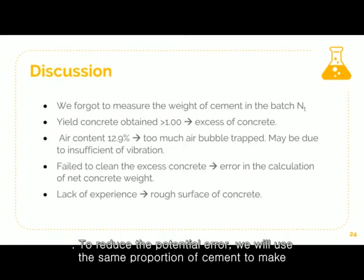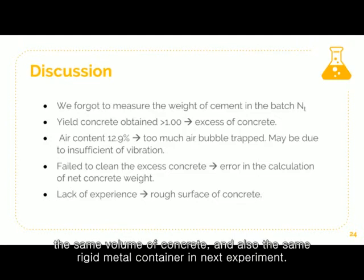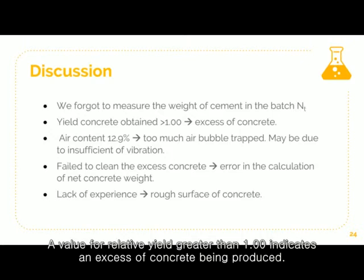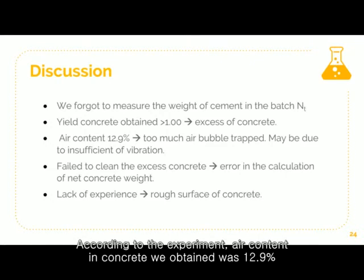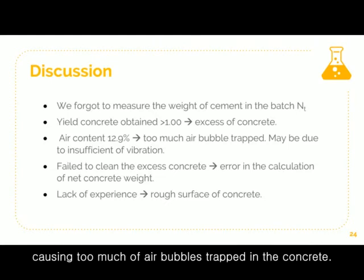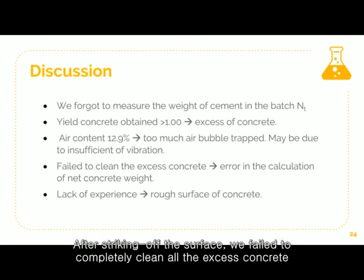To reduce the potential error, we will use the same proportion of cement to make the same volume of concrete and also the same rigid metal container in the next experiment. According to the experiment, the relative yield of concrete we obtained was 1.1. A value for relative yield greater than 1.0 indicates an excess of concrete being produced. Looking at the result, the air content in concrete we obtained was 12.9%, indicating that 12.9% of the concrete was void, possibly due to insufficient vibration causing too many air bubbles trapped in the concrete.